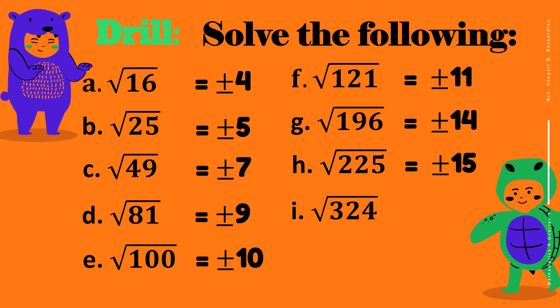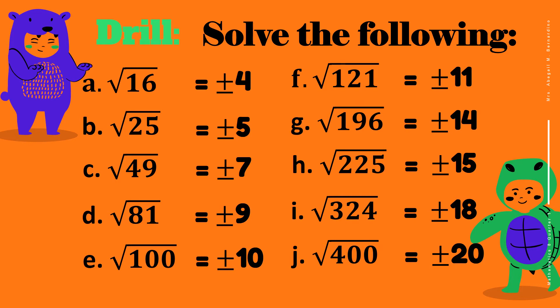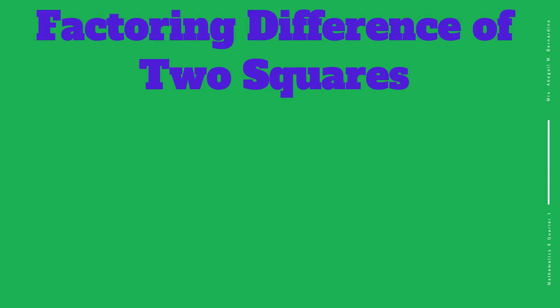We have the square root of 324, and the answer is positive or negative 18. And finally, we have the square root of 400, and the answer is positive or negative 21.